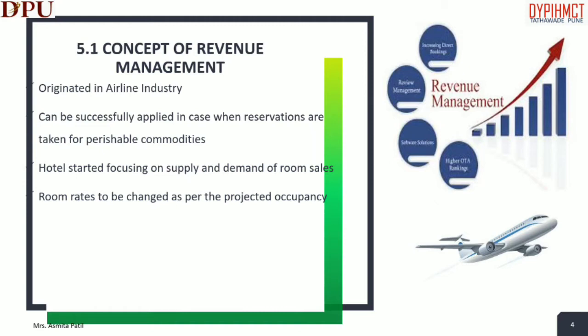As hotel managers became more comfortable with revenue management strategies, they realized there were more effective ways to adjust rates while maximizing revenue. Hotel companies conducted extensive analysis of guests who stayed at their hotel as well as those who preferred to stay elsewhere. Managers realized that room rates could accurately be adjusted based upon the demand of a specific market segment.